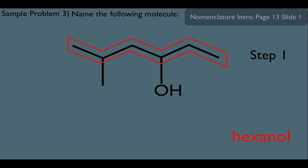That brings us to now step two. In order to get our low substituent numbers, we would have to number from left to right in this case. This gives us a substituent on carbon 2 and 4,